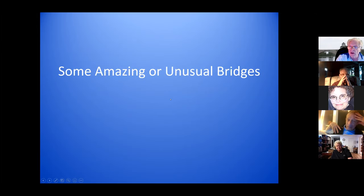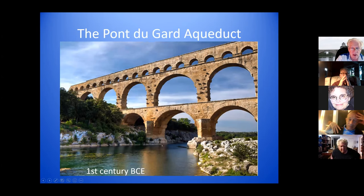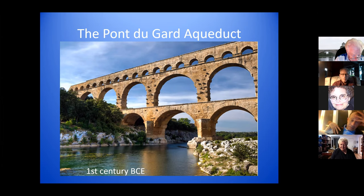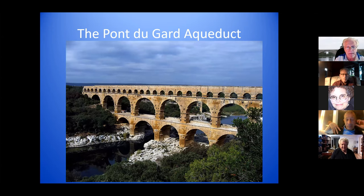I'm going to show you some pictures of interesting bridges. This is the Pont du Gard Aqueduct, built in the first century BCE — stone arch bridges of three levels, with the aqueduct at the very top level. It was built to carry water 30 miles, and the design was so precise that the total drop in level is 56 feet over 30 miles — not even two feet per mile. It's still standing, so stone is a very good material for building bridges.